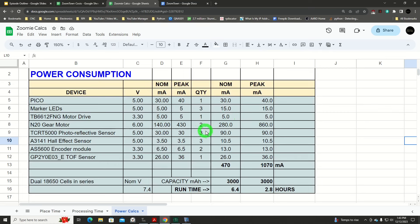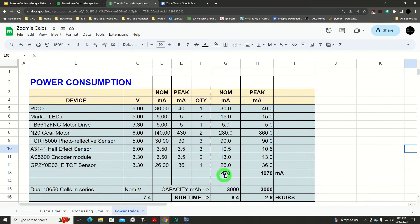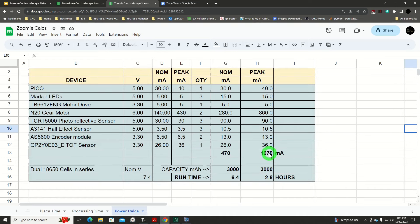The motor drive only pulls about five milliamps. That's not counting the current being pulled by the motor. The N20 gear motors, there's two of them for a total of 280 milliamps, which, relatively speaking, for the power that I'm getting out of them and the performance, I think that's quite low. So I was real happy with that. At a full peak stall current, it's still only 860 milliamps. The photo reflective sensors are pulling 90 milliamps. The Hall effect sensor is 10, and the AS5600 encoder modules are only pulling 13. And keep in mind this column here is taking into account the quantity of those sensors. So for our nominal column, we would be pulling about 470 milliamps and if everything was peaked out, a little over a full amp.